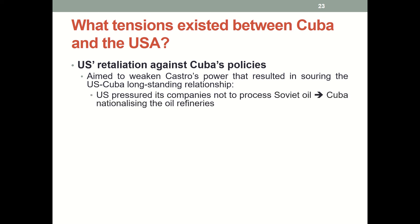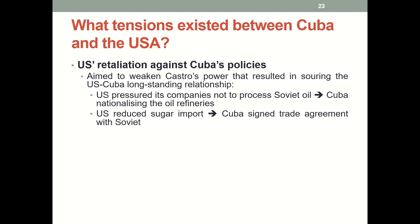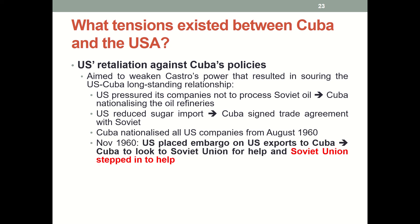It became an action-reaction dynamic. The US pressured its companies not to process Soviet oil, so Cuba nationalized the oil refineries. The US reduced sugar imports, so Cuba signed a trade agreement with the Soviet Union. Cuba then nationalized all US companies from August 1960, and in retaliation in November, the US placed an embargo on exports to Cuba. Cuba then looked to the Soviet Union for help, and the Soviet Union stepped in.